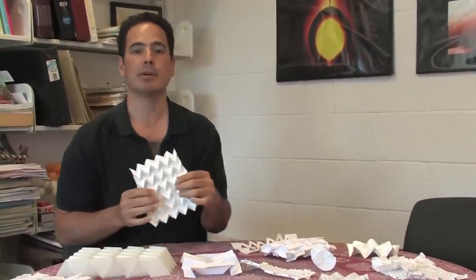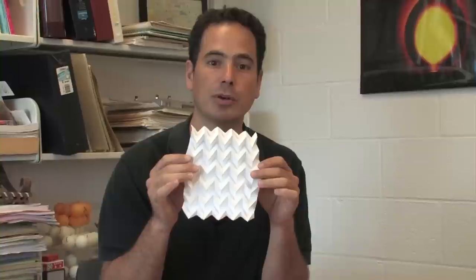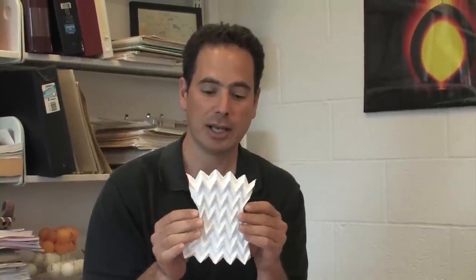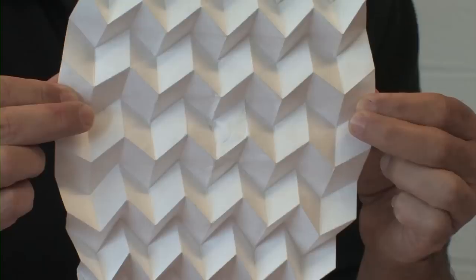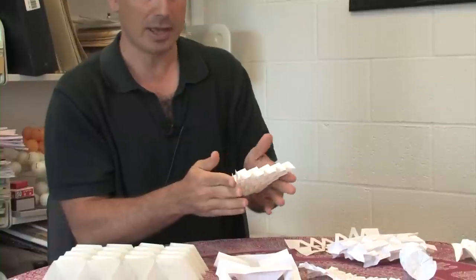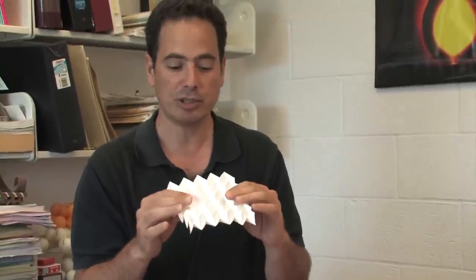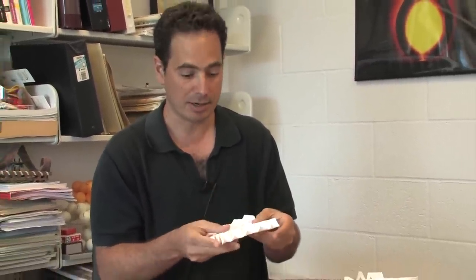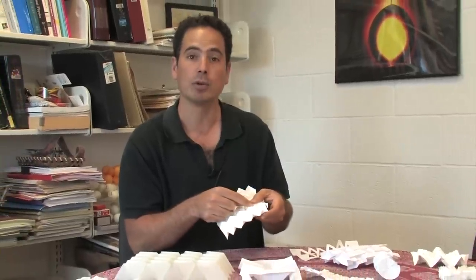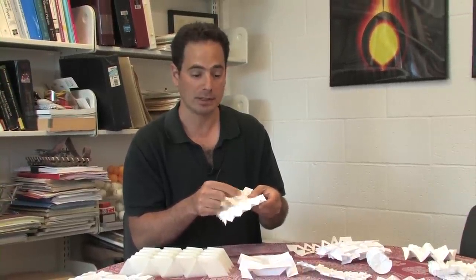The particular paper that we wrote in Science deals with the Miura-Ori fold. This is basically a series of parallelograms that, when folded into a sheet of paper, give that paper some mechanical properties that are determined by the fold patterns that we put into the paper itself.